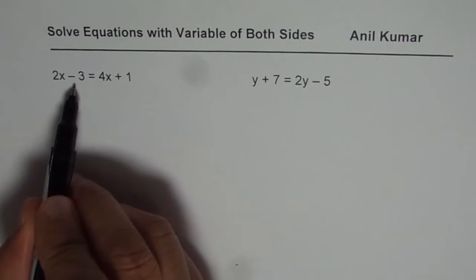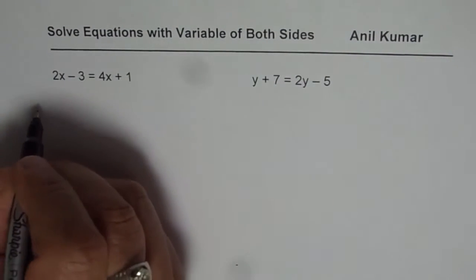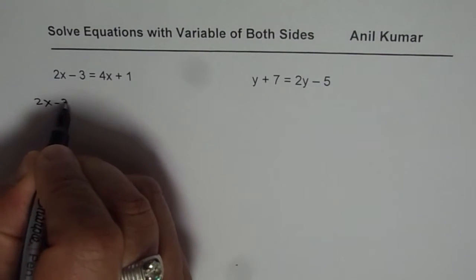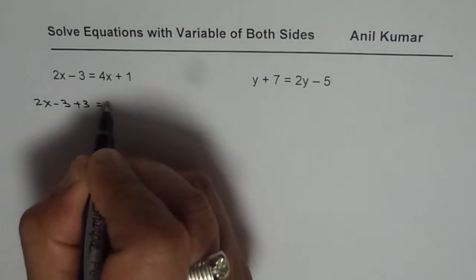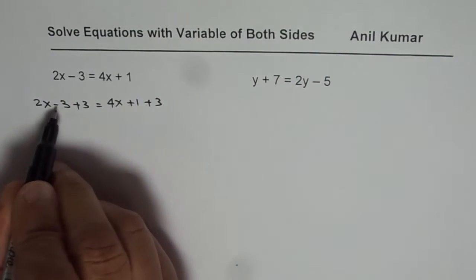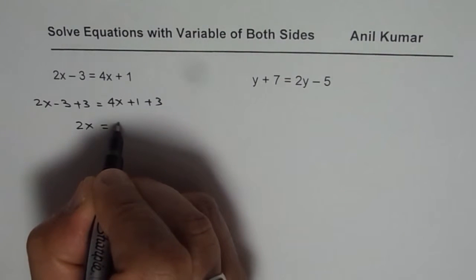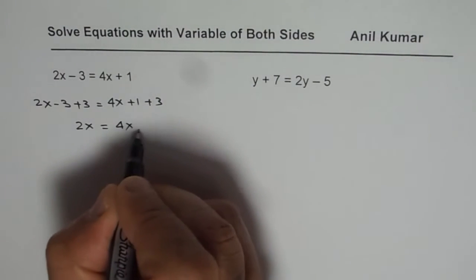So let us first take care of the numbers. Minus 3, we want numbers all on the right side, so we will add 3 on both sides. So we get 2x minus 3 plus 3 equals to 4x plus 1 plus 3. Now minus 3 plus 3 is 0, so we get 2x equals to 4x. 1 plus 3 is 4.